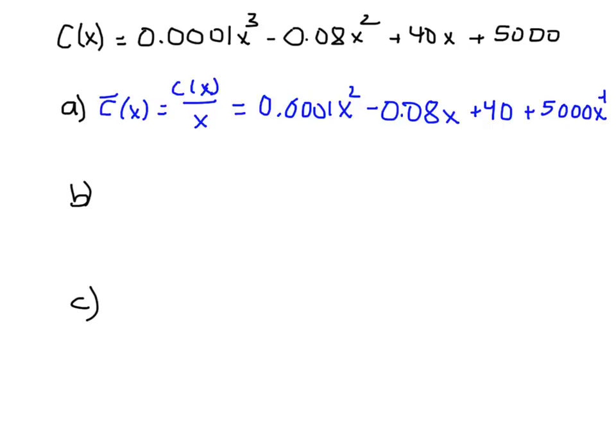Let's take the derivative because we need to find the marginal average cost function of part B. So C bar prime, we're going to use our power rule. That's 0.0002x - 0.08 + 0 for the 40, and then -5000x⁻².